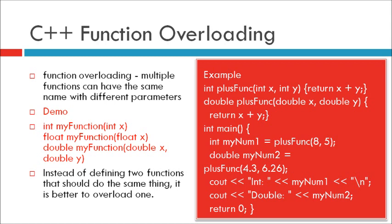For the demo: integer MyFunction in bracket integer x, float MyFunction in bracket float x, double MyFunction in bracket double x comma double y. Here we can see there is the same name for all functions, that is MyFunction, but we can see different types of signatures.